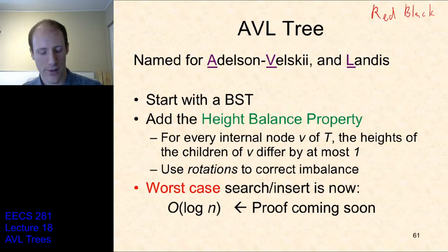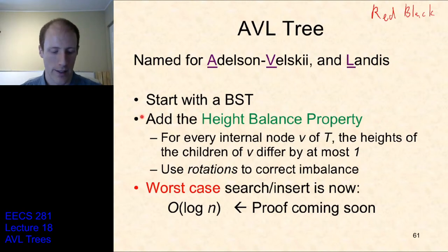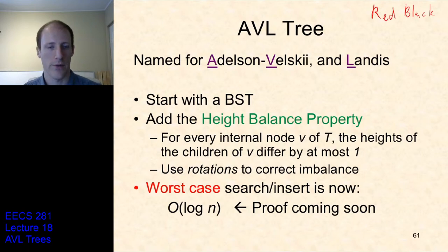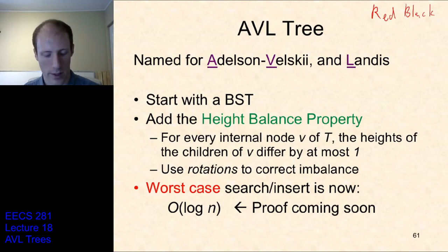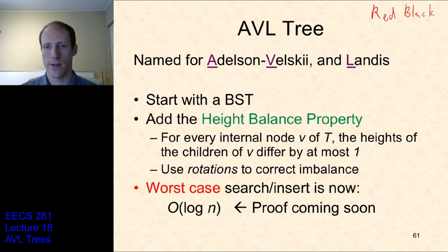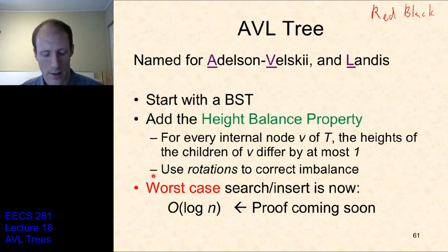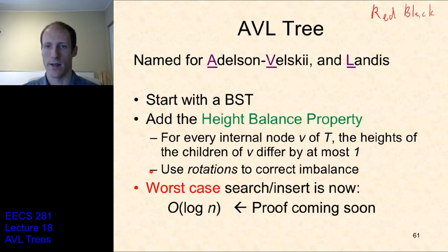So an AVL tree is a binary search tree, and we're going to add to it this extra property called the height balance property, which is: for every internal node, the heights of the children differ by at most one. When you insert or remove something from the tree, this property might be violated. So we're going to use something called rotations to correct imbalance.